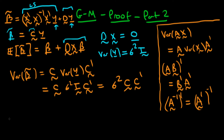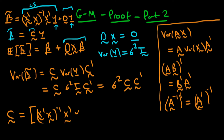At this point it's useful to write out the explicit form of our matrix C. Our matrix C is equal to (X'X)^{-1}X' plus D, because when we apply this matrix C to Y we get the expression for beta tilde written up here.